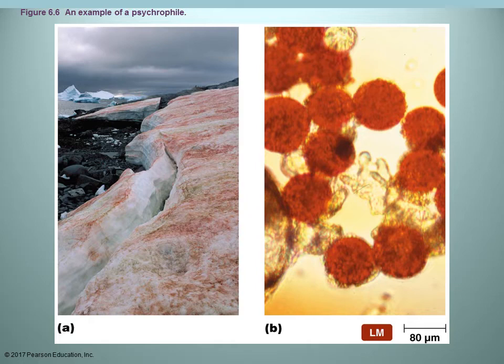Here's an example of psychrophiles growing on a glacier. Figure A shows a pinkish color. An anecdote: a student who had been a tour guide in Alaska recognized this picture immediately — tourists would pay money to see the 'pink snow,' and she never knew why it was pink until this lecture. Figure B shows what those organisms look like microscopically.